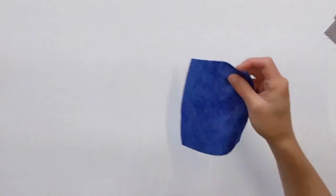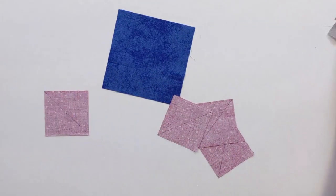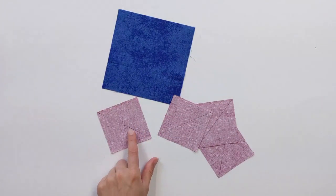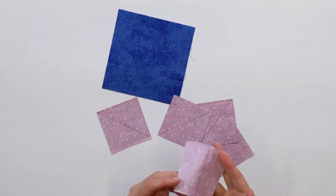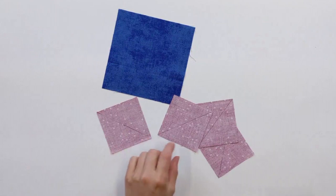What you essentially need to make four at a time flying geese is one big square and one, two, three, four little squares. I have marked my squares with a pen and I'll talk about marking in a second. Usually I mark them with a Hera marker, but I thought this might be a little difficult for you to see. So I've gone ahead and used the pen.